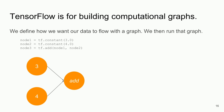A graph has been created, but it hasn't been instantiated. The way you put data through the graph for an operation to be performed is with a session. You call a session, and the output would be seven. I was reviewing my deck and actually had this as six for a long time, so that was a good last-minute check of simple addition.